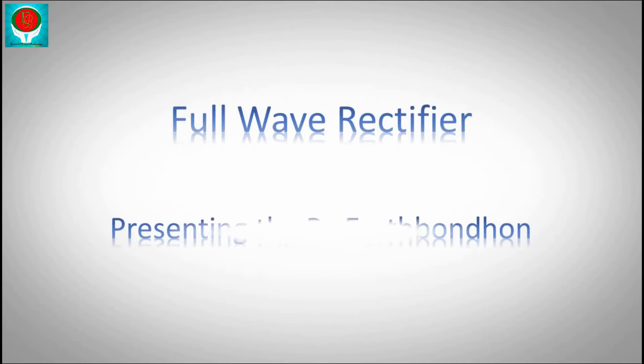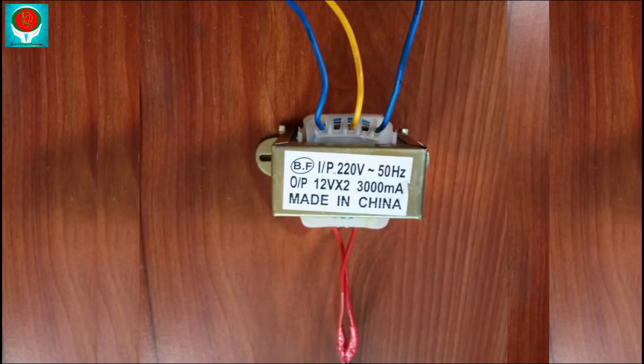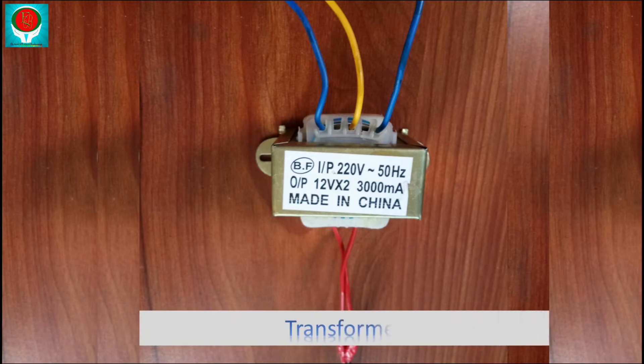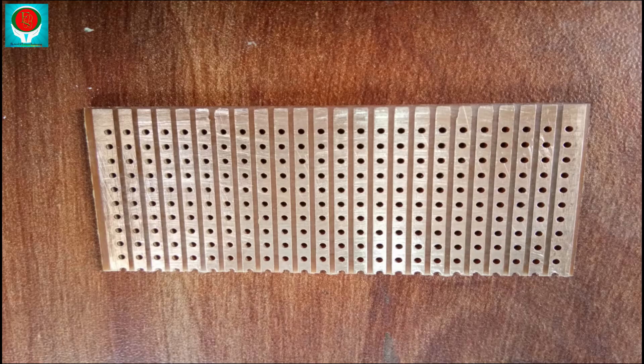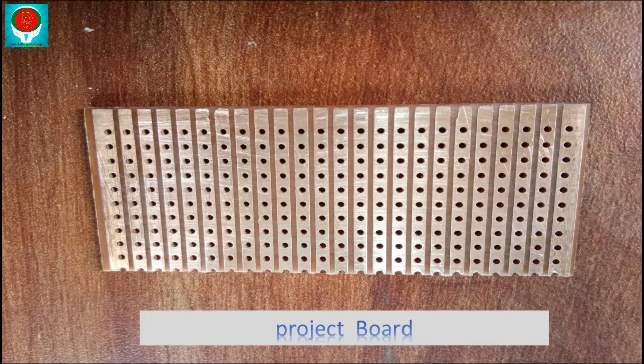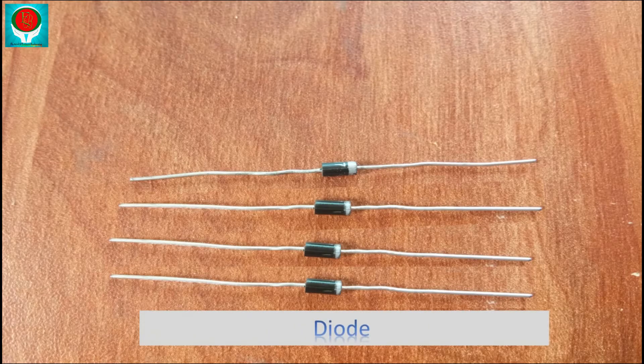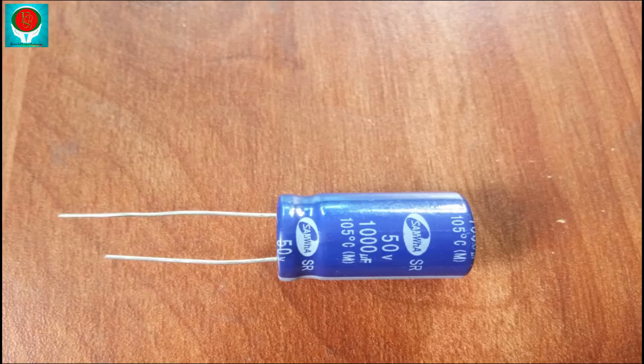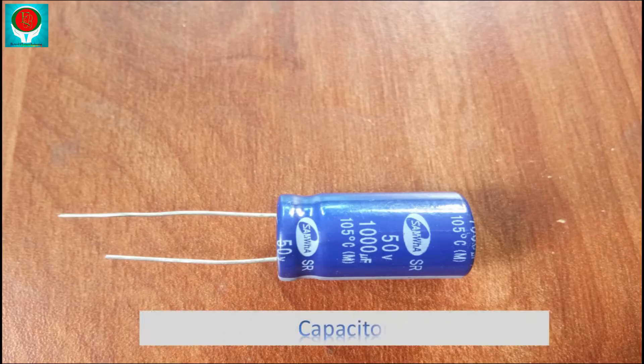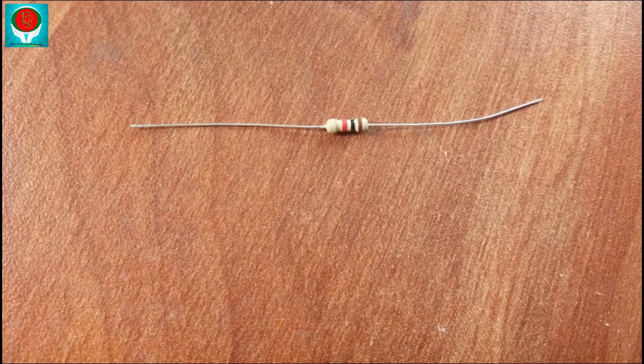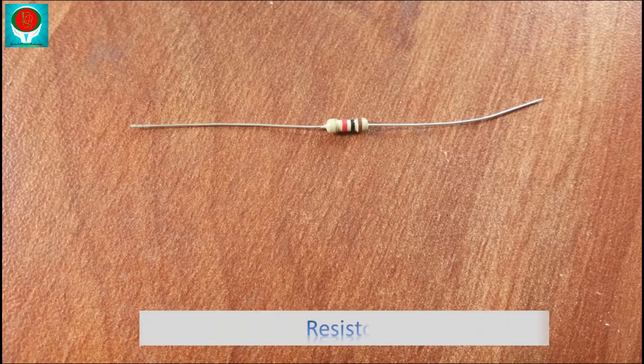Presenting the components by EarthBondHum: 1 transformer 12 to 12 volt step down, 1 project board, 4 pieces diode IN4001, 1 piece capacitor 100 microfarad 50 volt, 1 piece 1 kilo ohm resistor, and 1 piece LED.